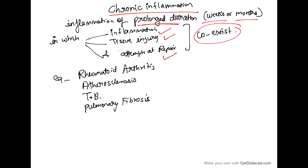So what is chronic inflammation? Any inflammation which is of long duration, wherein we can find inflammation, tissue injury signs, and attempts of tissue repair — all three coexisting together. Examples include chronic conditions like rheumatoid arthritis, atherosclerosis, tuberculosis, or pulmonary fibrosis.